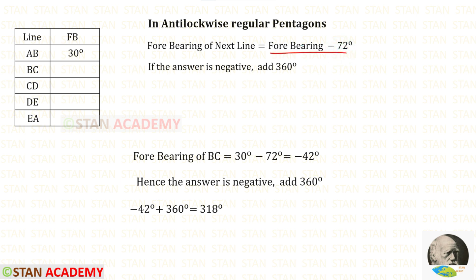Using this formula, let us find the forebearing for BC. 30 degrees minus 72 degrees gives the forebearing of BC. But we have got a negative value. We know that when we get a negative value, we have to add 360 degrees. When we add 360 degrees with this, we will get 318 degrees.